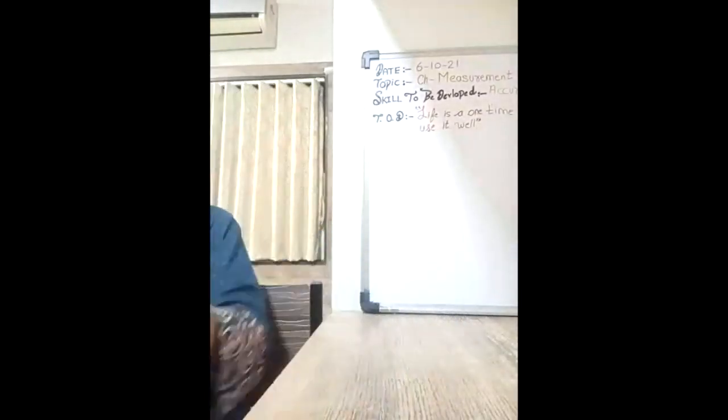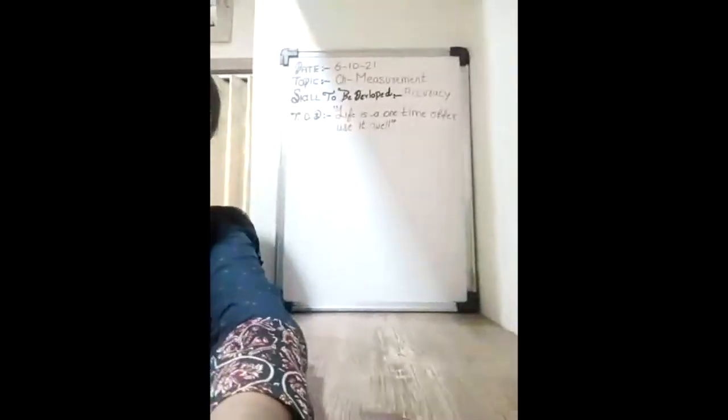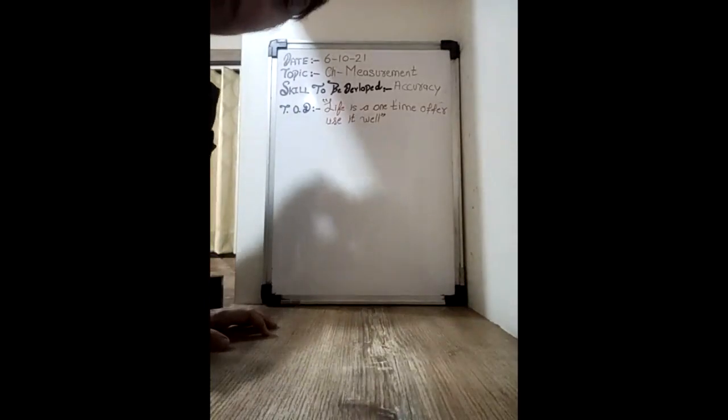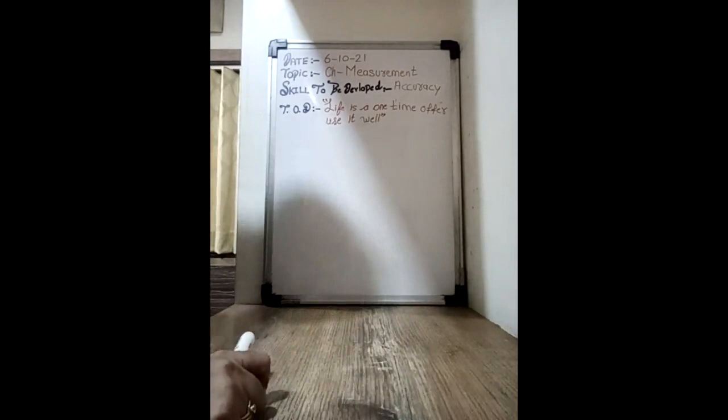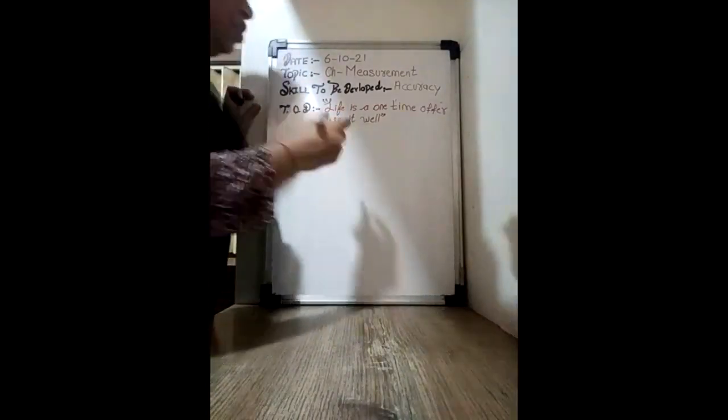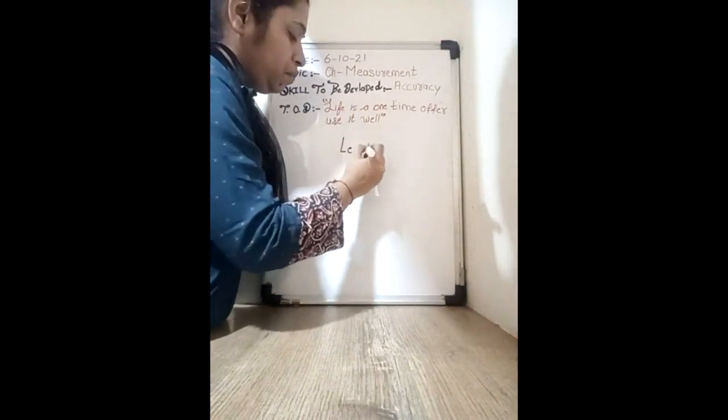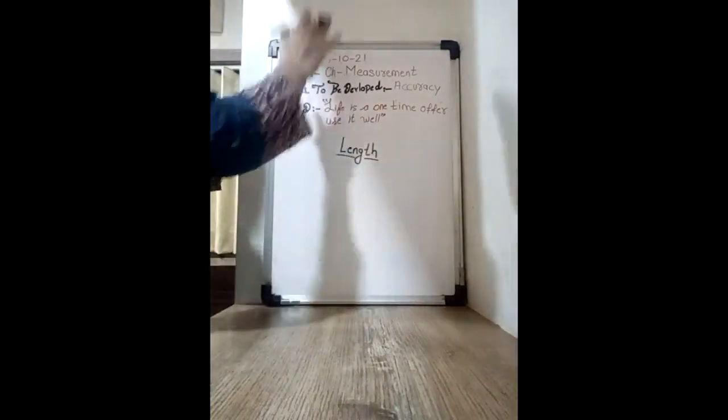So our measurement topic has been completed — measurement by non-standard units, by using our body parts, is also clear. So today's topic is length. I already told you there are three ways to measure an object: one is length, second is weight, and third one is capacity. So firstly we will discuss about length. Let's start today's topic.